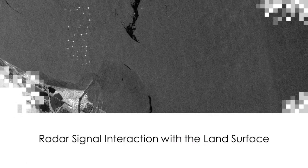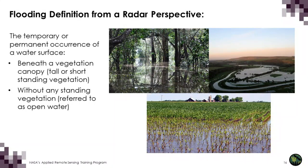Next we'll discuss the radar signal interaction with the land surface as related to flooding. From a radar perspective, flooding refers to two different conditions: a water surface beneath a vegetation canopy, whether forest or agriculture, and open water with no standing vegetation. When I refer to an inundated forest, it means standing water above the soil surface beneath the vegetation canopy. Something to remember is that the radar detects standing water but not the amount — one centimeter or one meter of water above the surface produces the same radar signal response.